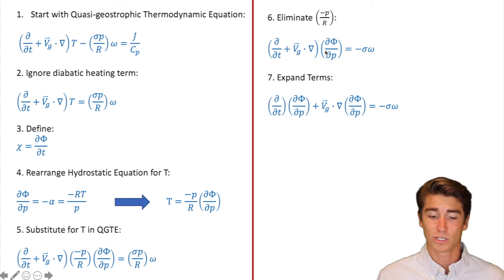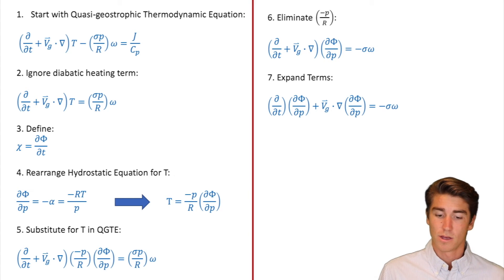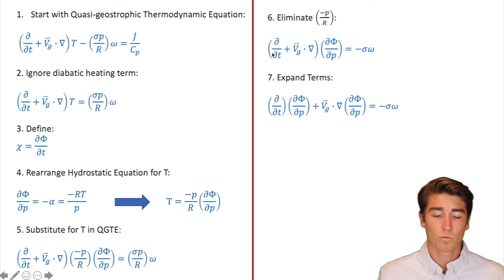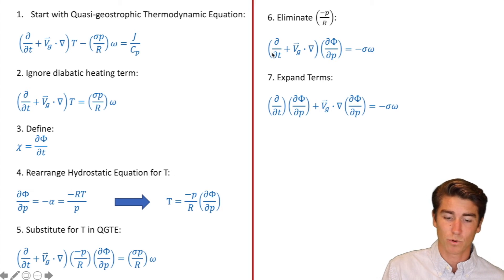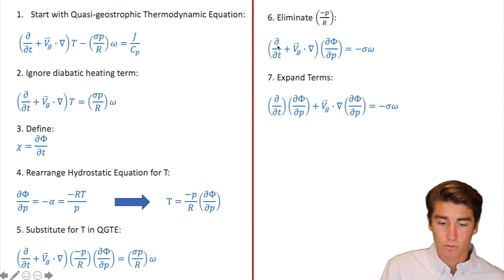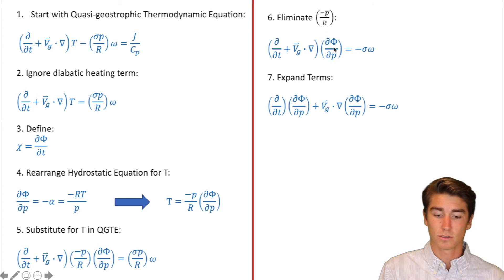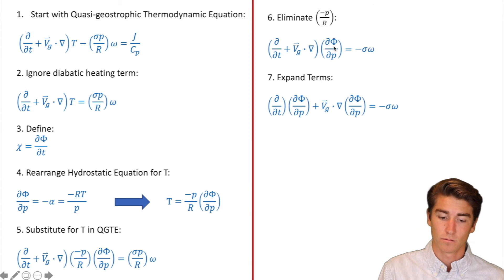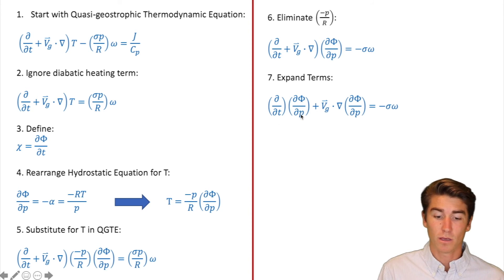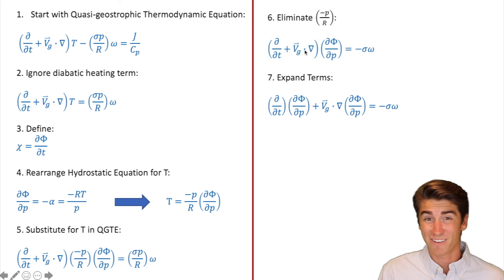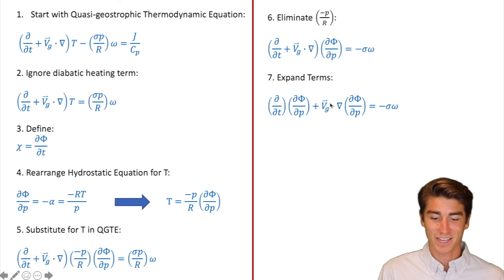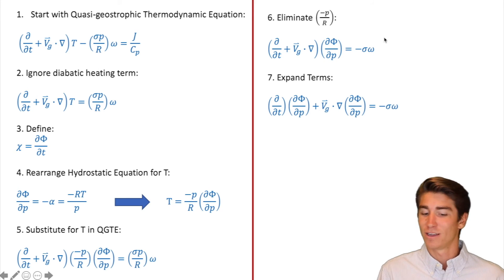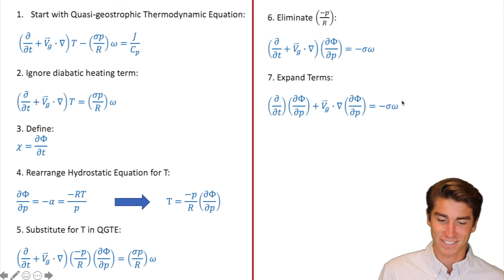In step seven we are going to expand the terms. When I say expand the terms, I mean just like you would in a normal multiplication problem — you're going to distribute these two things into the d-phi/dp term. So when you distribute d/dt, you get d/dt times d-phi/dp, plus that advection term goes in: advection times d-phi/dp. The right-hand side stays the exact same.